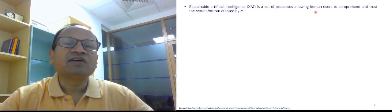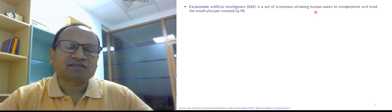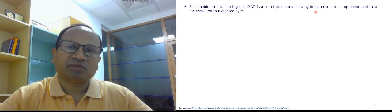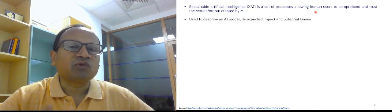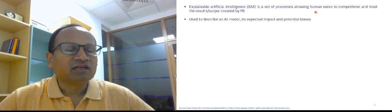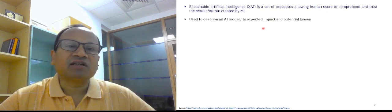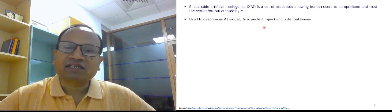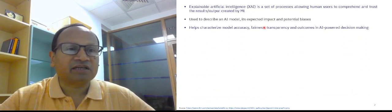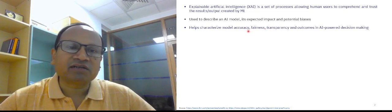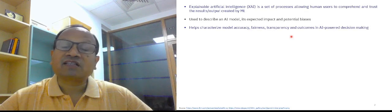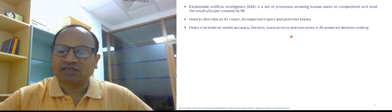Artificial intelligence, which is being treated as a black box, also becomes interpretable, it also becomes explainable. Justification is there so that one can trust in AI model. It helps characterize model accuracy, fairness, transparency and outcomes in AI powered decision making.